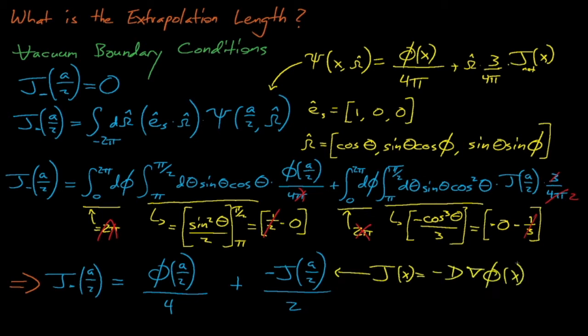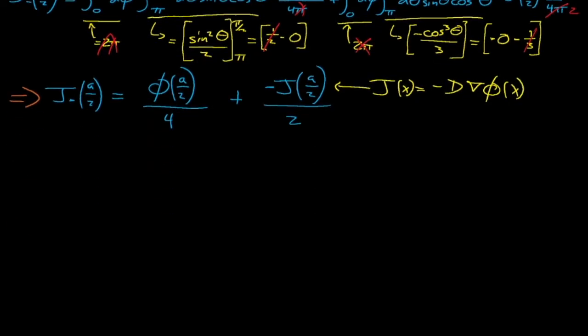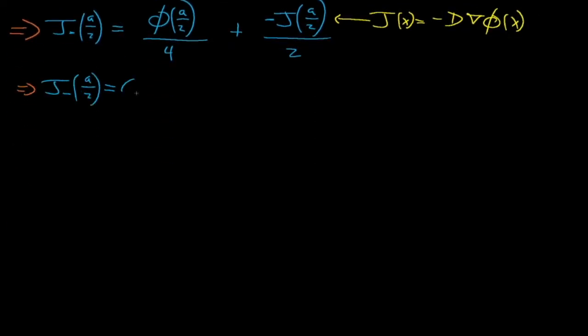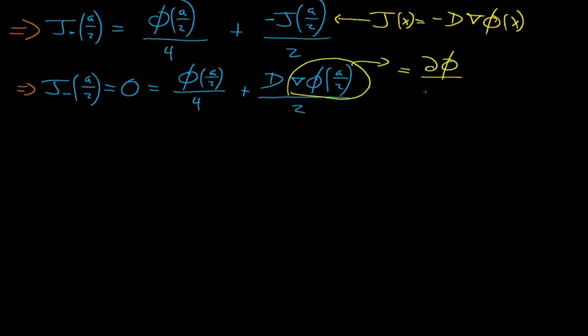Next, we can apply Fick's law to replace the net current term with negative D times the gradient of the flux at the boundary. So what is the gradient of the flux at the boundary? In the x dimension, the gradient simply equals the derivative of the flux with respect to x, and we can use the secant rule to approximate this derivative using this combination of the flux at the boundary and the flux at some point delta x beyond the boundary.